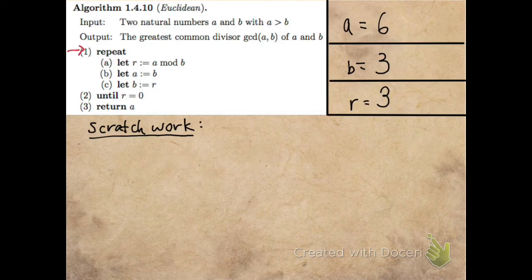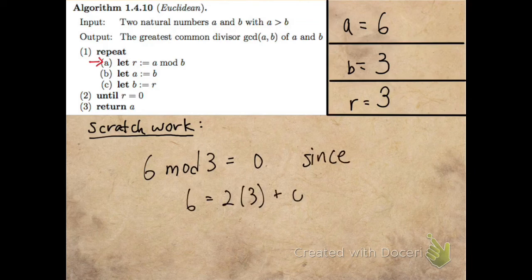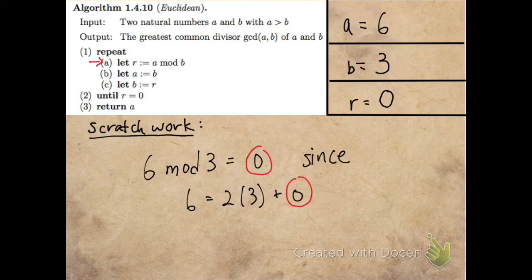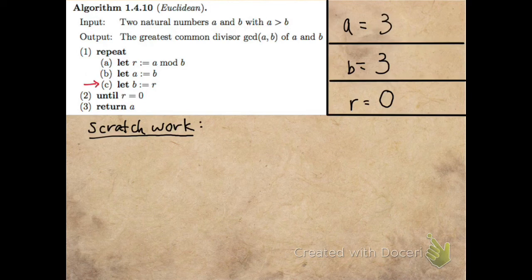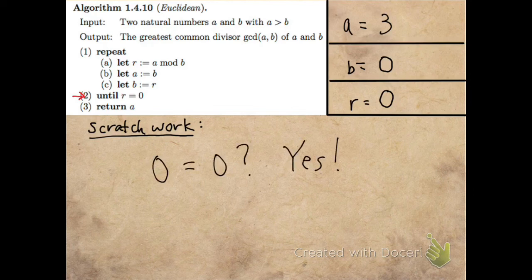Well, 0 is equal to 0, so I'll let A equal B and B equal R. I check again, is R equal to 0? Well, 0 is equal to 0, and so I go to the next step,